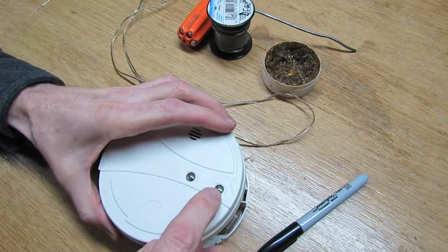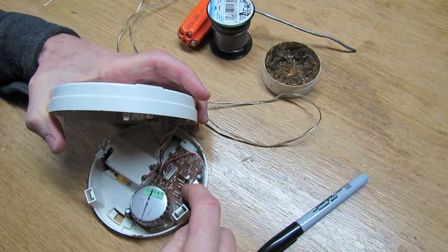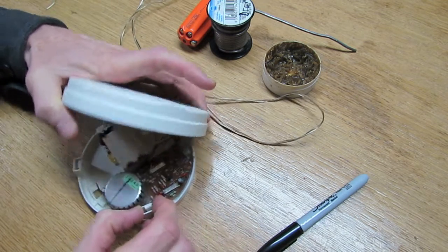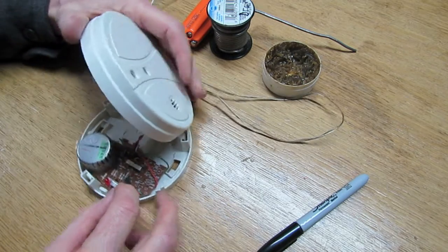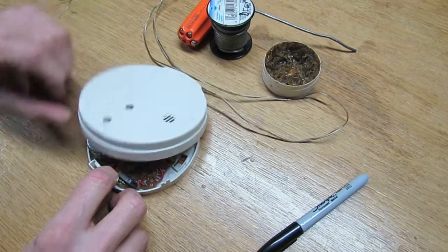Once you get it apart, you can see the test button's right here and there's the little fingers there. You can give it a push and we'll see. Yeah, that's it right there. The other one over here is the hush button. Next we want to take that circuit board off, and if you look there's going to be a couple of little claws that hold that on there. So we'll just undo those.